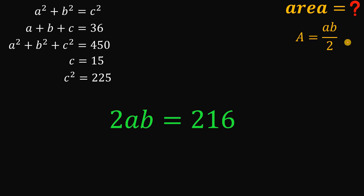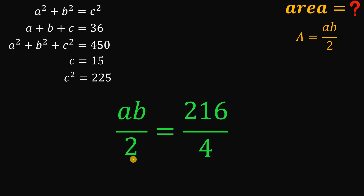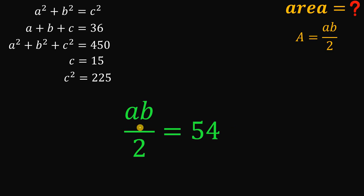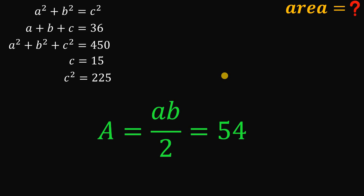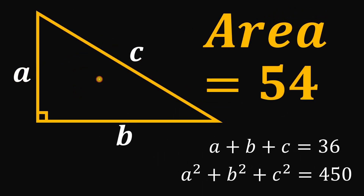We want AB all over 2. Instead of solving for AB, we divide both sides by 4, because 2 divided by 4 is 1 over 2, giving us AB over 2 on the left-hand side. And 216 divided by 4 gives us 54. Therefore, AB over 2 equals 54, which is also the area of our right triangle. The area of this right triangle is 54 square units.